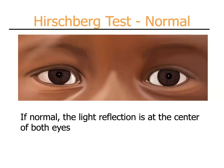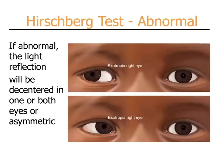You can see the light reflection is essentially centered in the pupil in a normal test. In an abnormal Hirschberg test, on the patient's right eye you can see that the light reflex is almost to the sclera — this indicates that the eye is deviated outward or exotropic. In the lower example, the light reflex is near the outer edge of the iris close to the sclera, indicating that the eye is deviated inward or esotropic.